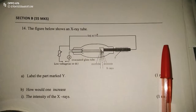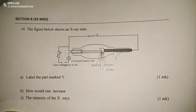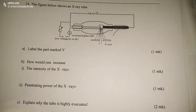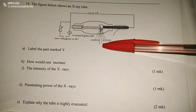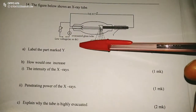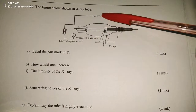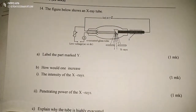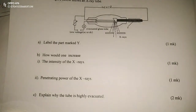Thank you for joining this lesson. We're going to do a physics lesson on X-rays. We are told that the figure below shows an X-ray tube, and we can see it. It is an X-ray tube where X-rays are being produced. We have an evacuated glass tube, low voltage — either alternating current or direct current — and a high-voltage X-ray tension. The questions are as follows.